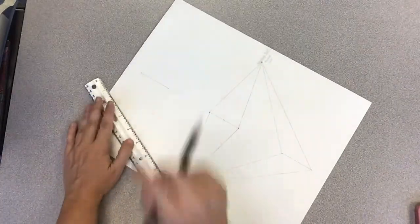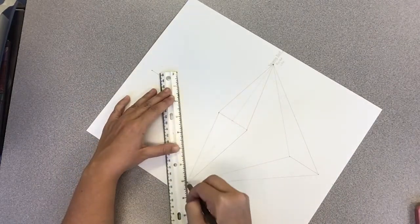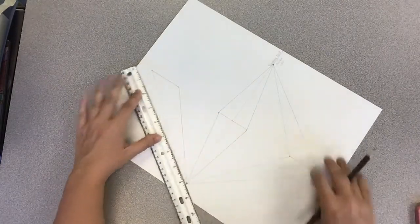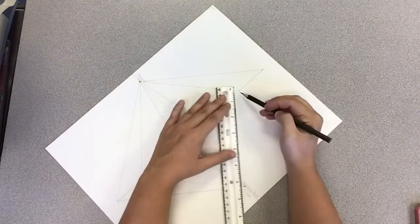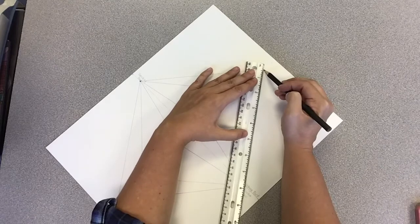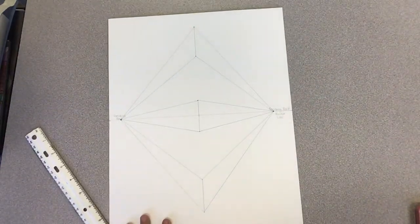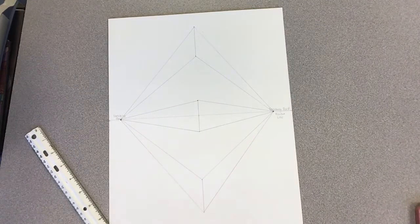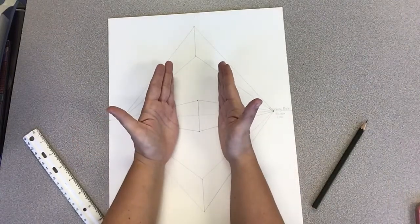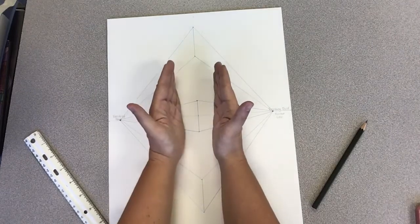Alright, and then your worm's eye view. Same thing. Connecting the top of the line to the vanishing point and the bottom of the line to the vanishing point. Okay, so now you should have something that looks like this. The next thing that we need to do, like you did on your last one, is draw perfectly vertical lines to become the edges of these boxes.